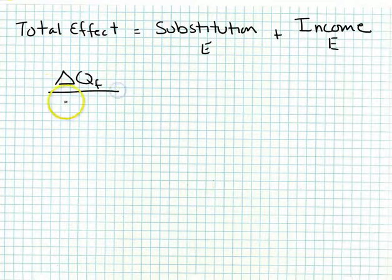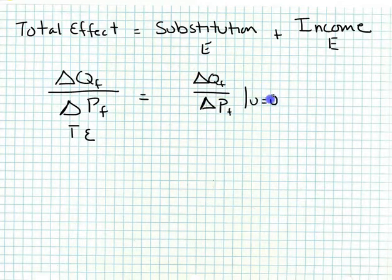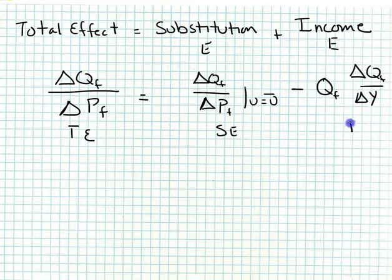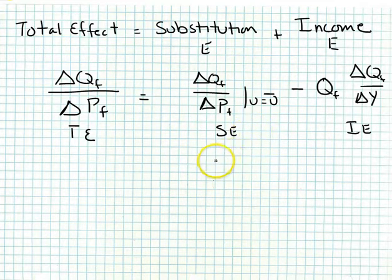The total effect is equal to the substitution effect — which is the change in the quantity of food given a change in the price of food holding utility constant — and we subtract out the quantity of food multiplied by the change in the quantity of food given a change in real income. That negative operator adjusts the income effect for the direction of the price change: when prices go up we substitute out of them, and when prices go down we substitute into the particular good.